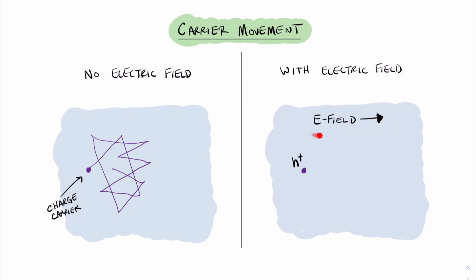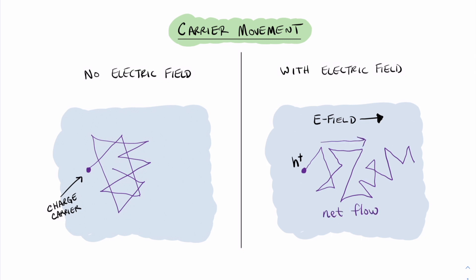As soon as we introduce an electric field, the carriers will start to move. To illustrate this with a hole: yes, there will still be scattering and bouncing around, but on net, that carrier is drifting or moving in a net direction — there's some net flow. The same thing could be said for an electron; however, the electron will act oppositely to the electric field. So instead of moving from left to right as the hole did, the electron will move in the opposite direction, bouncing around but with a net flow to the left.